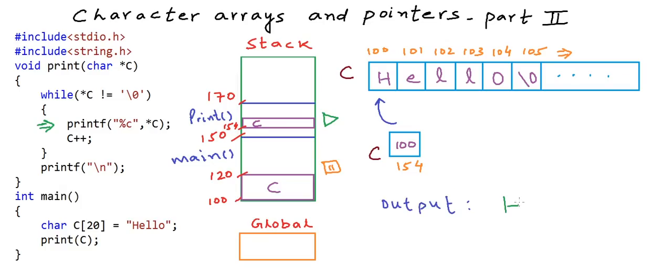Let's write down the output here. So we have printed H so far and then we say C++. If we understand pointer arithmetic from our previous lessons, incrementing a pointer by one unit increments the address by size of the data type that the pointer points to. C here is a pointer to character data type and character data type is one byte. So C++, is saying C is equal to C plus one, so C now becomes 101. So now C points to the second character in the array.